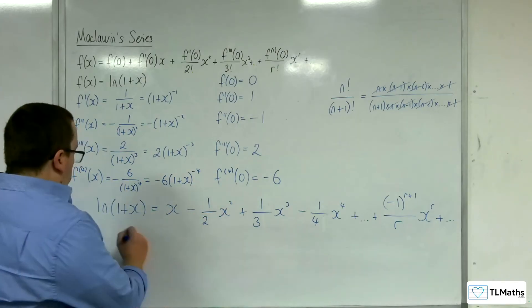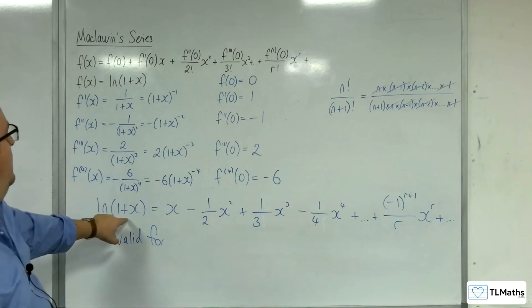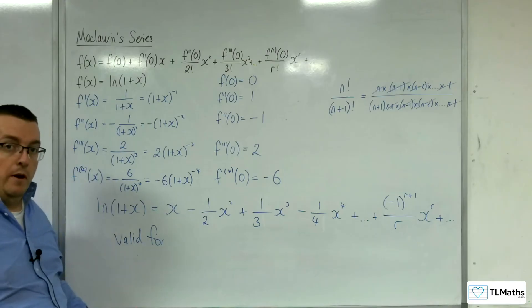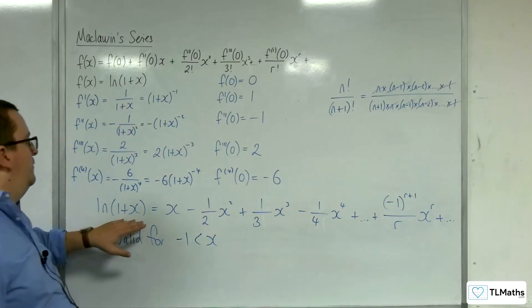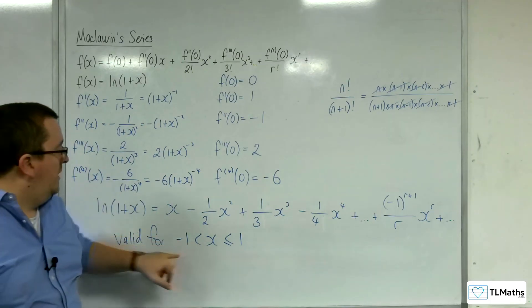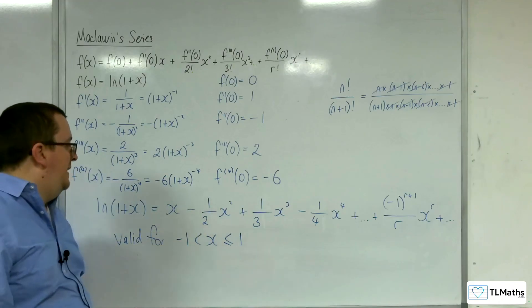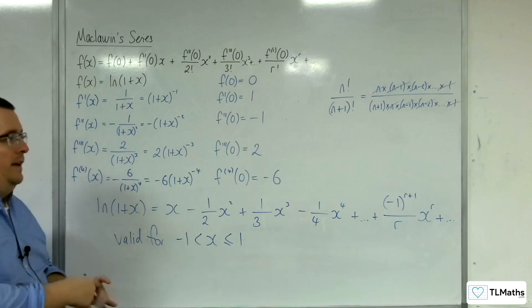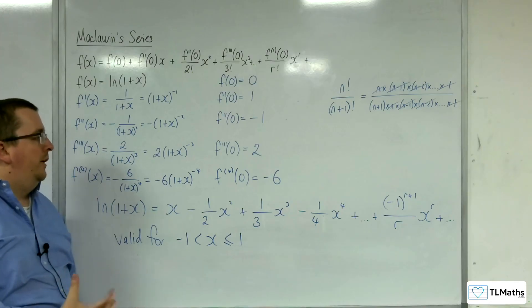Now, what is this valid for? Well, you can clearly see from the function that if you substitute in minus 1, you're going to have problems, so x has got to be greater than minus 1. It actually turns out this isn't valid anywhere beyond x equals 1. So it's valid for x greater than minus 1, which we can see from the function itself, but also it has to be less than or equal to 1. Otherwise it's not converging — it's not homing in on an answer — and these expansions don't work.